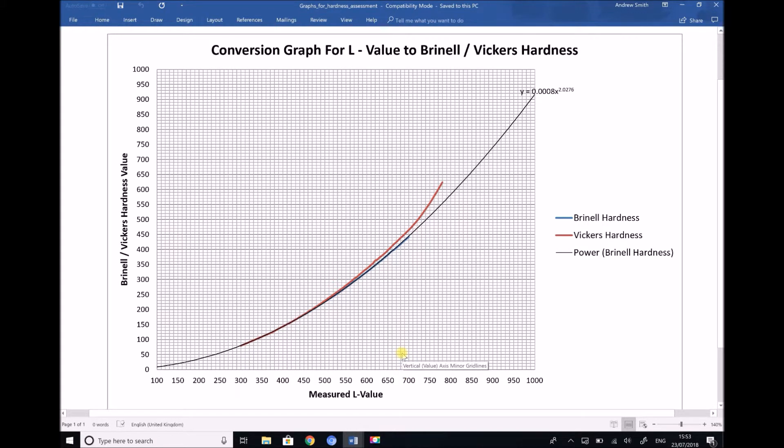Now because some of our average L values are going to be greater than 700 we've needed to extrapolate that curve in order to allow us to determine the Brinell hardnesses from those L values.